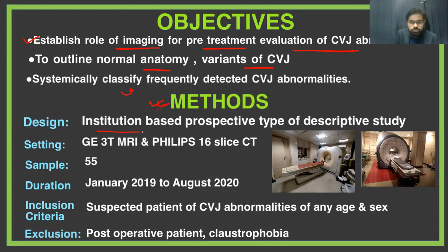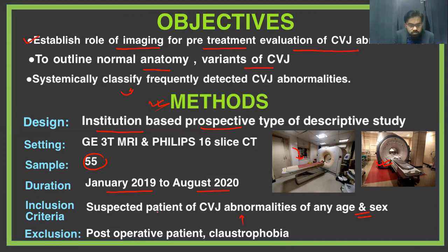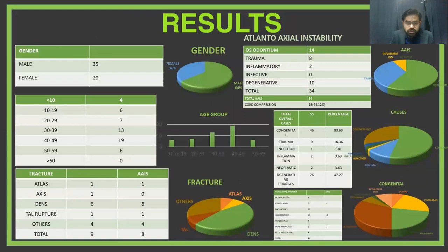Regarding material and methods, this is a single institution, prospective, descriptive study with a sample size of 55, conducted between January 2019 and August 2020. We used a 3T MRI and Philips CT machine. The inclusion criteria covered all suspected patients with CVJ abnormalities of both sexes and all ages. The only exclusion criteria were contraindications to MRI such as metallic implants, claustrophobia, or post-operative status. Informed consent was taken from all patients before inclusion.